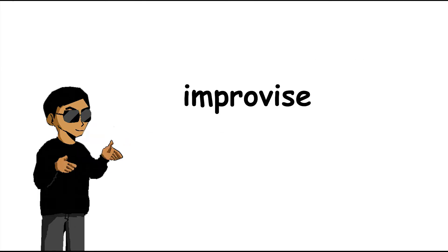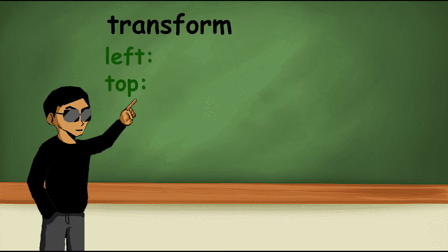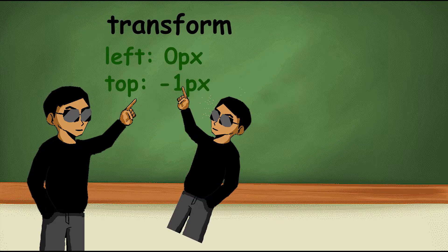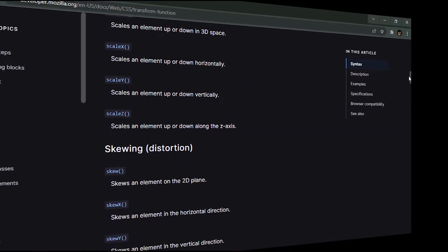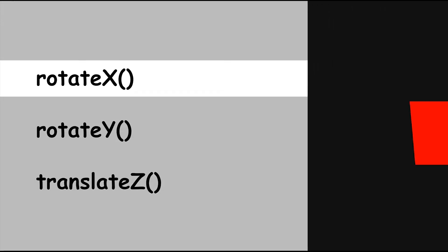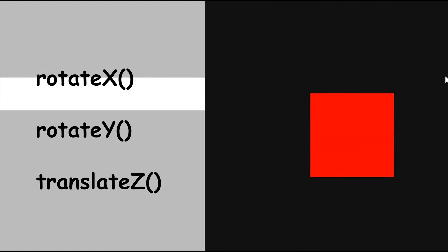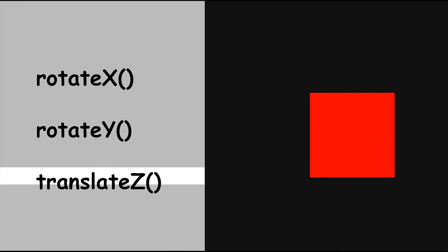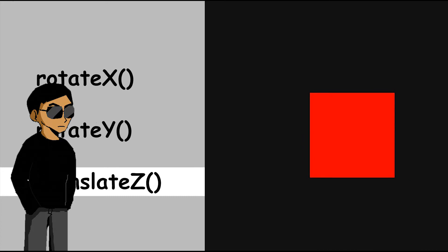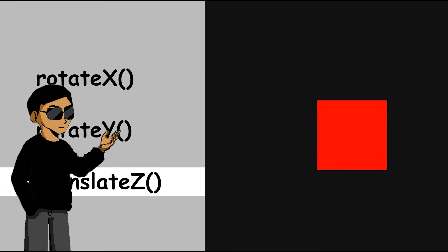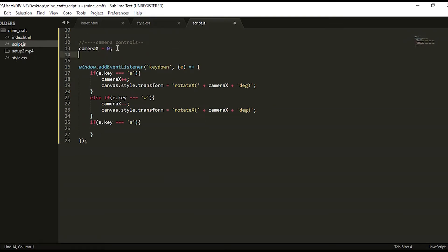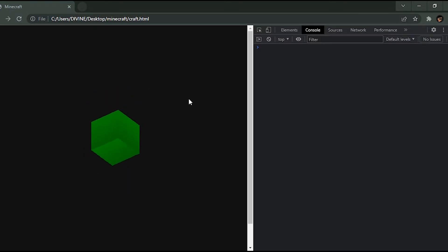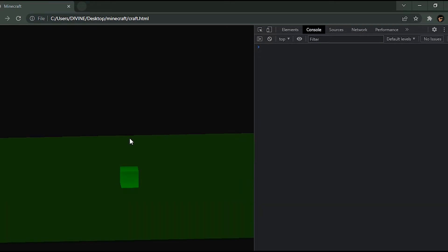We're going to have to improvise. CSS comes with a property called transform. While other CSS properties take one item as a value, the transform property takes a function as its value, and that function takes one value as its argument. We're focusing on three transform functions: rotateX, which rotates elements on the X-axis; rotateY, which does the opposite; and translateZ, which is simply the distance from an element to your screen. To imitate camera movements, we manipulate the values of these in JavaScript. Since JavaScript reads CSS values as strings, we do a simple concatenation, passing variables as the values of each function and adjusting them based on conditions. Once that was done, I finally had basic camera movements going.